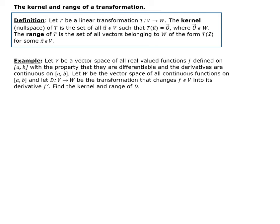The range of T — the range of the linear transformation — is the set of all vectors belonging to W such that those vectors get mapped to W for the vectors X that belong to the vector space V.